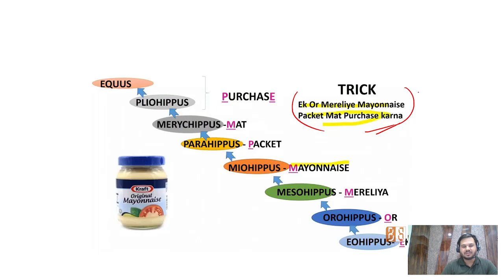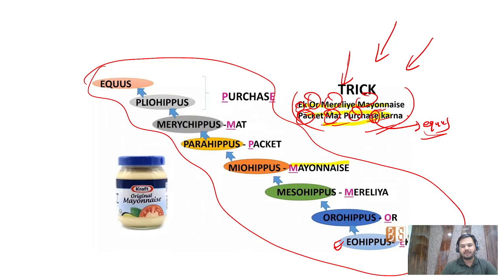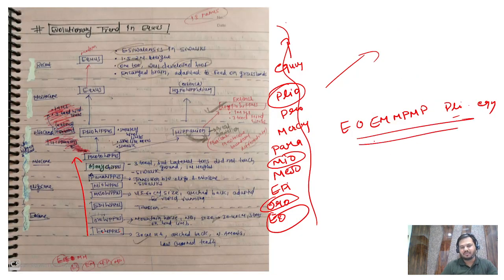A mnemonic from a biology teacher uses a Hindi sentence - 'Ek car meri mayonnaise packet mein purchase karna' - where E stands for Eohippus, then Orohippus, Mesohippus, Parahippus, Merychippus, Protohippus, Pliohippus, and finally Equus. If you're not comfortable with Hindi, make your own mnemonic. Something like E-O-E-M-P-M-P helped me recall the sequence in exams. Make your own and you'll remember it.